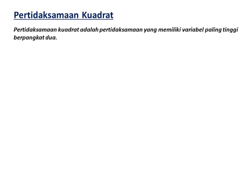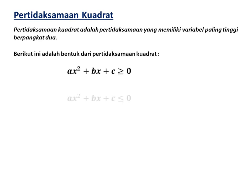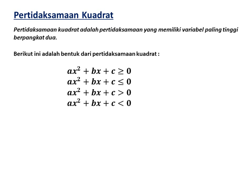Pertidaksamaan kuadrat adalah pertidaksamaan yang memiliki variabel paling tinggi berpangkat 2. Bentuk dari pertidaksamaan kuadrat ada 4 bentuk: AX² + BX + C ≥ 0, di mana A tidak sama dengan 0. Tanda ketidaksamaannya bisa ≤ 0, > 0, atau < 0.